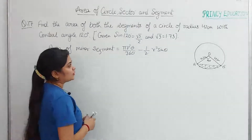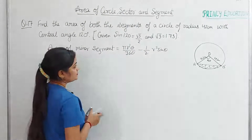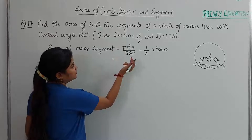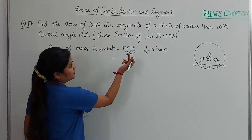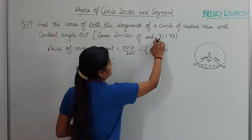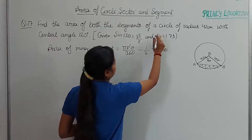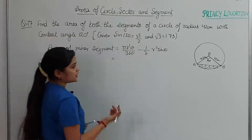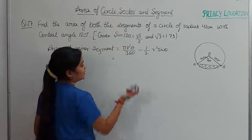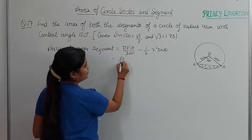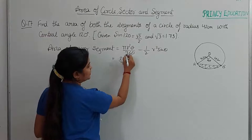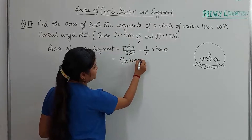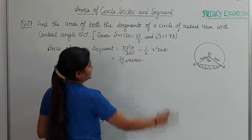The root 3 value is given as 1.73. The pi value is not given separately, so we directly use 22 upon 7. R squared means 42 × 42, and theta is 120 degrees.